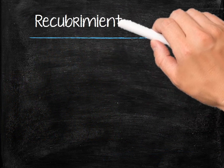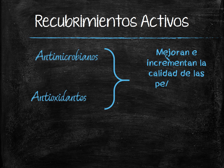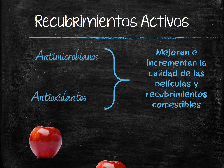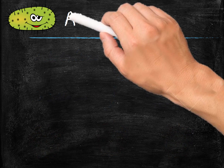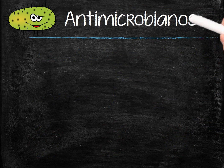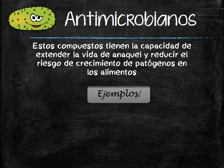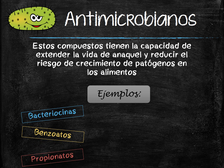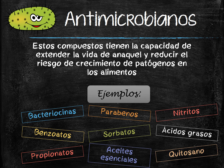Active packages. They can contain antimicrobials or antioxidants that can improve their quality and function. These compounds have the ability to extend shelf life and reduce the risk of foodborne pathogens. Some examples are bacteriocins, benzoates, propionates, parabens, sorbates, essential oils, nitrites, fatty acids, and chitosan.